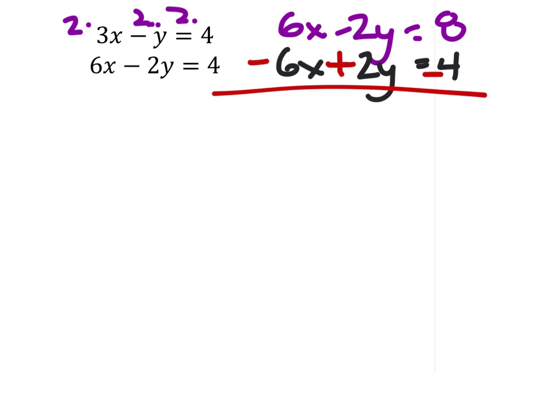The problem with this example, which is what makes it unique, is not only do the y's become 0, they cancel, but the x's do as well. Which means we have 0 equals 8 minus 4 is 4.